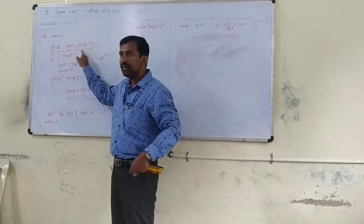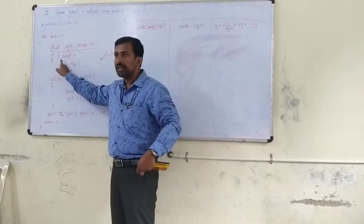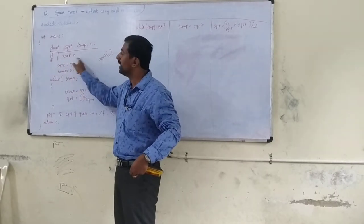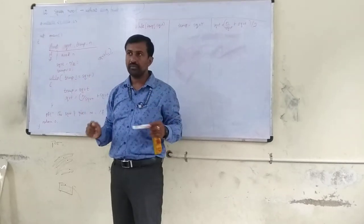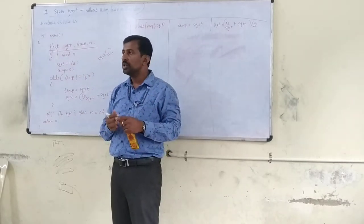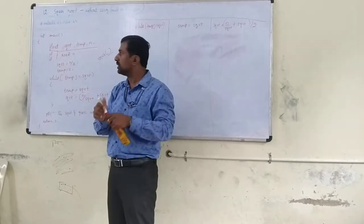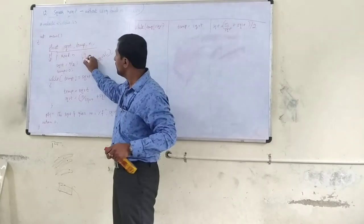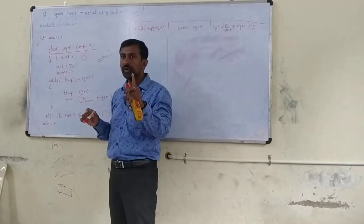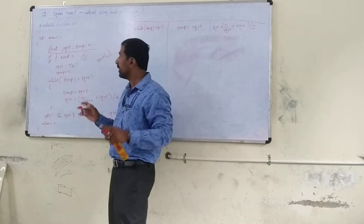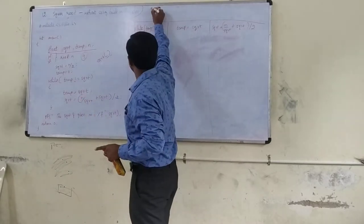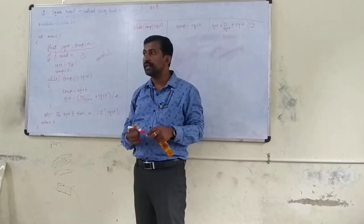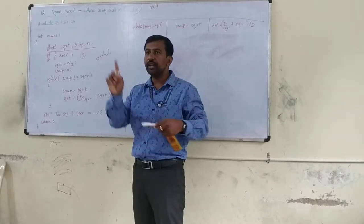Here we have two statements: printf and scanf. Printf: enter one number. Scanf with %f and ampersand n — you read the n value through the keyboard. Once you enter the value, suppose you are going to find out the square root of 9. So my n value is 9. What is the square root of 9? You have to get the answer 3.